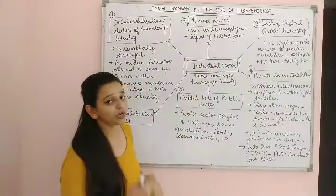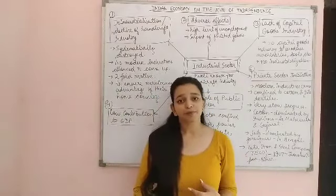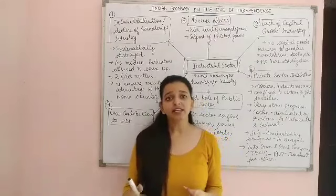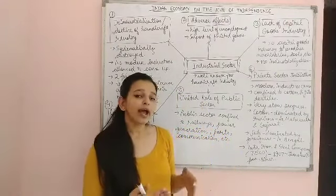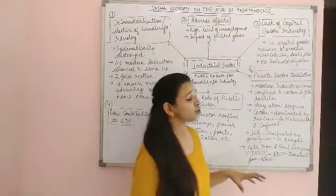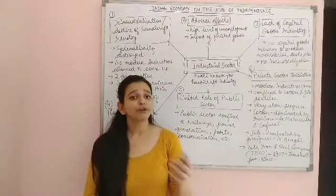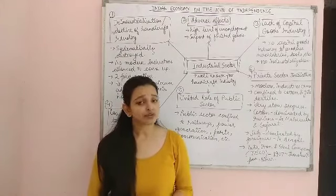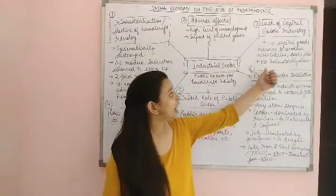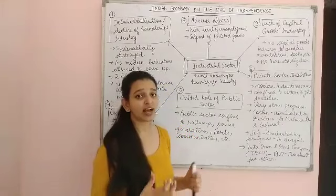The third effect is the lack of a capital goods industry. Capital goods — as we discussed in macroeconomics — are basically machines, plants, and tools which help in production. These are goods we don't consume directly but use to produce other goods. There was no capital goods industry set up in India; machines and tools were imported from Britain. This meant that industrialization in India could not take off, because without a capital goods industry, no machine-based manufacturing could be established.